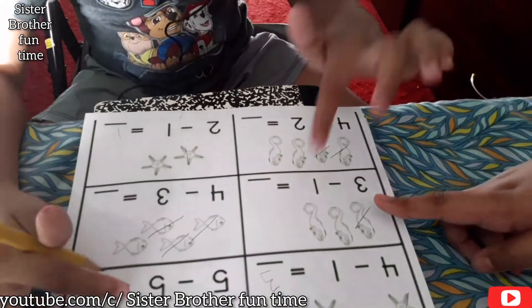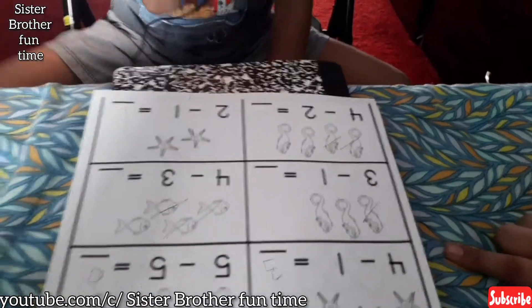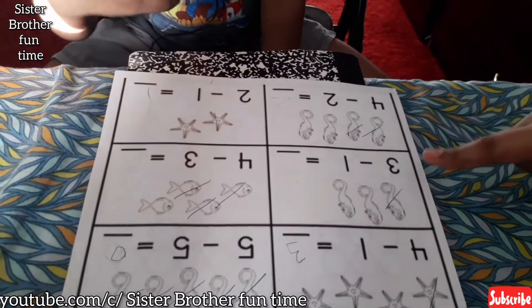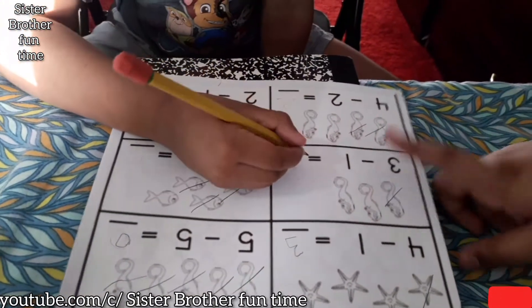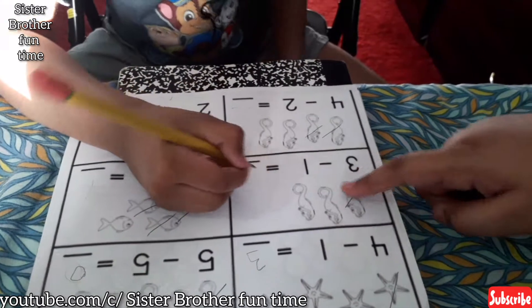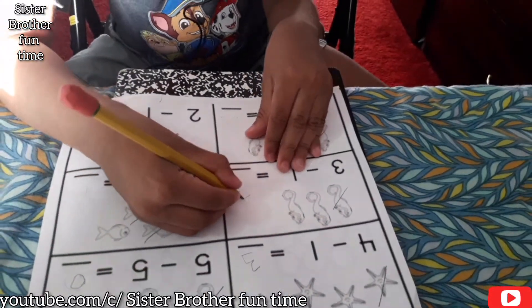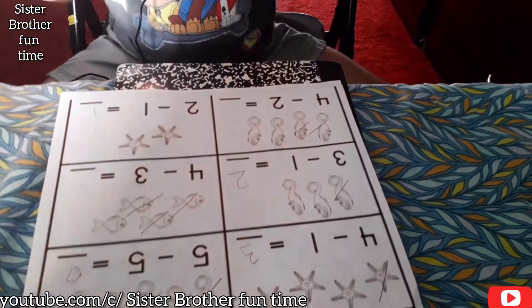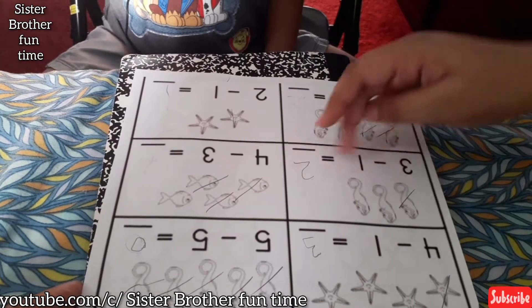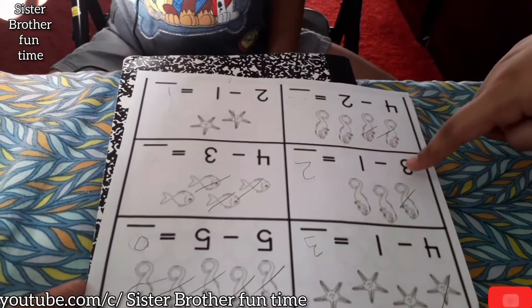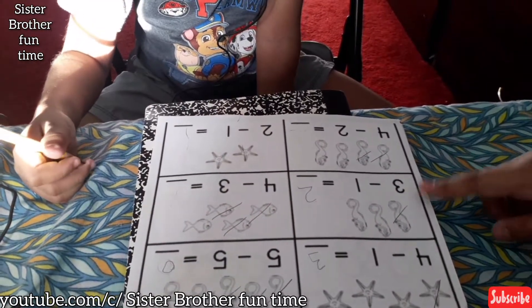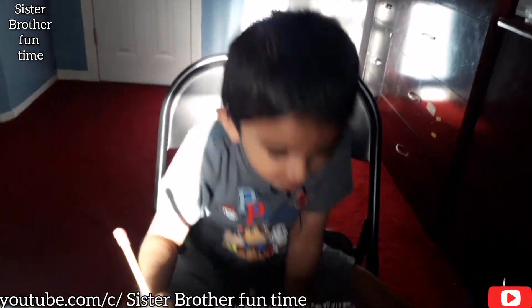Three minus one. Masha, how many fishes are there? Two. So put two. Three minus one equals? Two. You say it. Three minus one equals? Two. Okay, Masha.